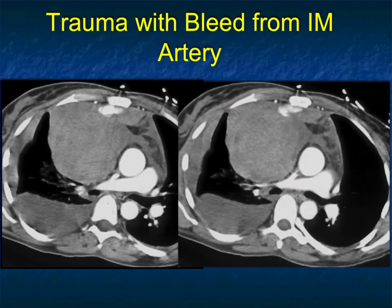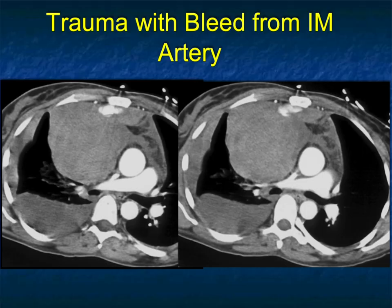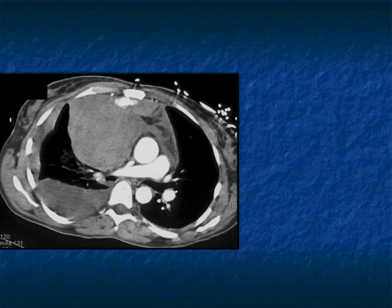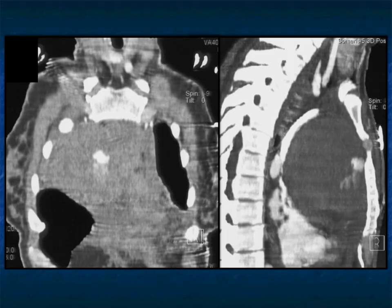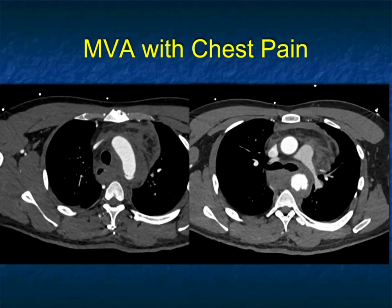What about trauma as a mimicker? Here's a large mass, but you can see it's high density. If you look carefully, there's actually bleeding from the internal mammary artery. This patient had trauma — that's the reason the patient had injury to the internal mammary artery with a large anterior mediastinal bleed. This patient will go to surgery or embolization depending on concurrent injuries. This looks like blood, and you can see the active bleeding. Short of biopsy, nothing causes bleeding from the internal mammary arteries like that.